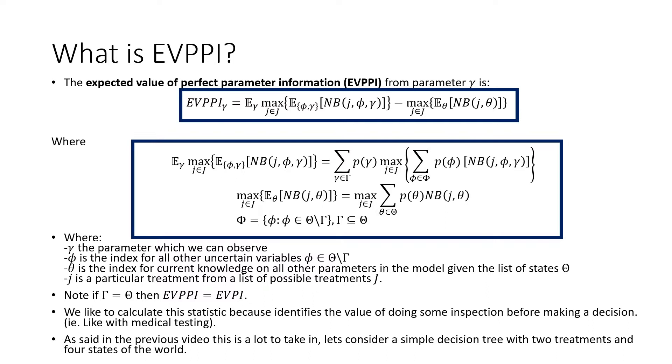Just in terms of notation, we're going to denote gamma as the parameter which we could observe, phi as the index for all other uncertain variables such that phi is in this set of theta, which is all states of the world without gamma, which is this observed state of the world when we're considering the expected value with perfect parameter information.